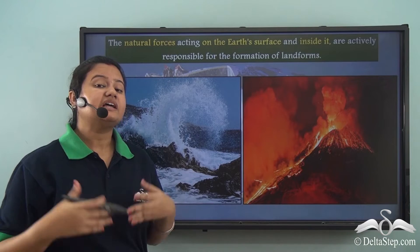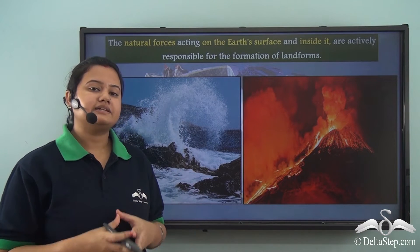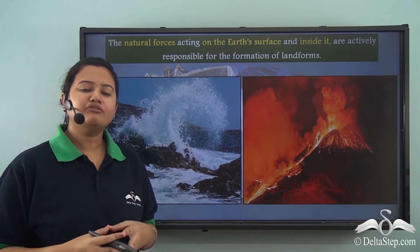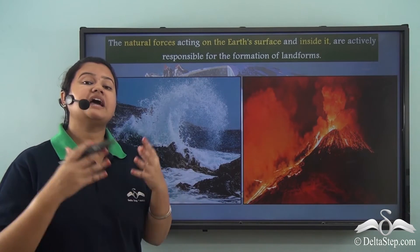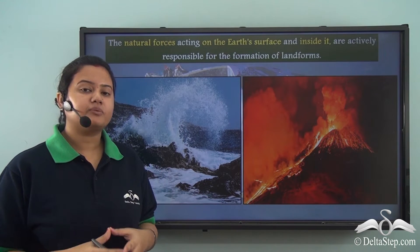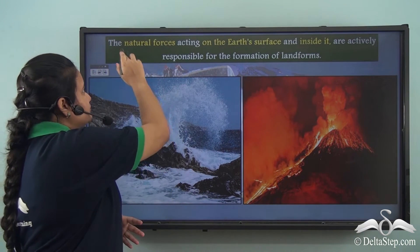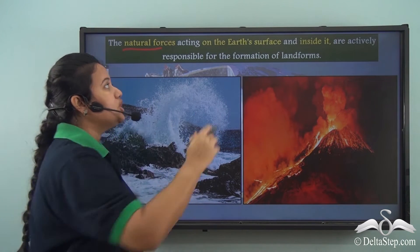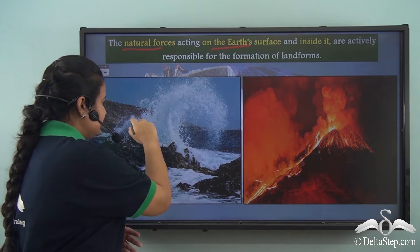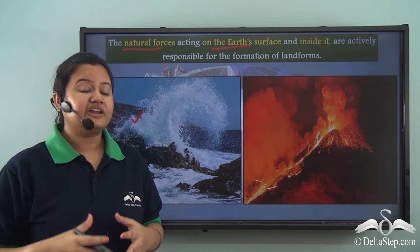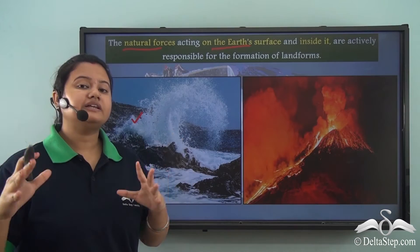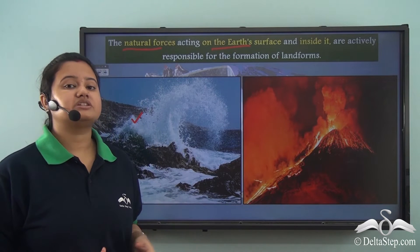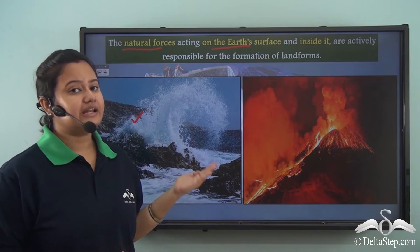Now that we have understood the meaning of landforms, let us see how landforms are formed. A landform is a physical feature that is formed naturally on the earth's surface, so landforms are formed due to natural forces. There are some natural forces that act on the earth's surface, like sea waves, running water, wind, and rainfall, and these forces are responsible for forming different landforms.